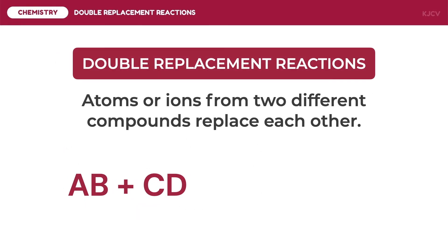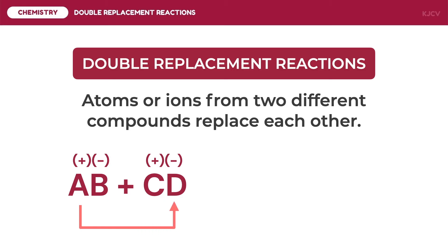Double replacement reactions involve two compounds that exchange atoms or ions to form two different compounds. Let's say we have a substance AB reacting with substance CD. In substance AB, A is the cation and B is the anion. In substance CD, C is the cation and D is the anion. In double replacement reactions, the ions will form bonds with the opposite ion of the other compound.